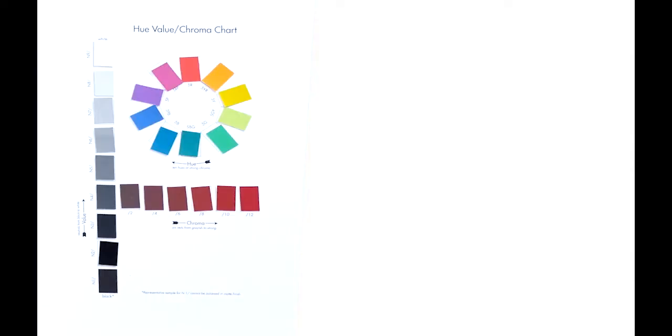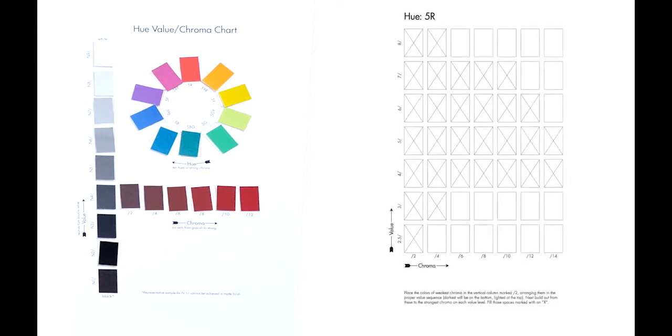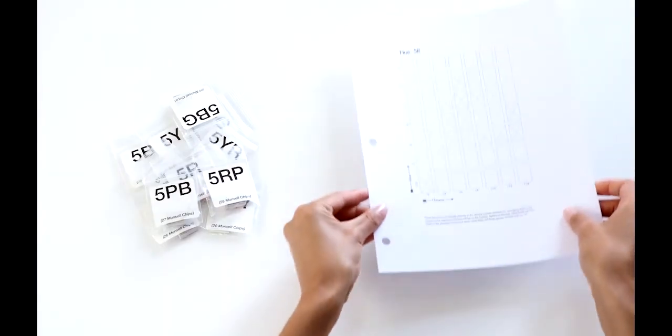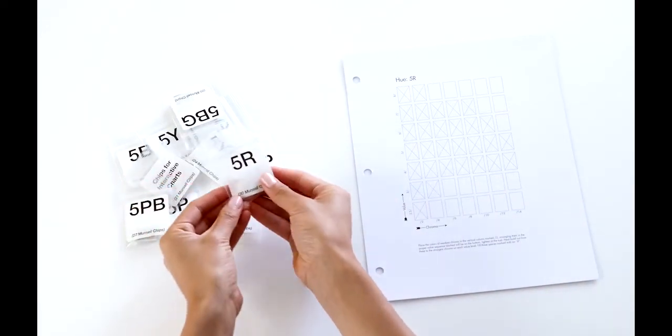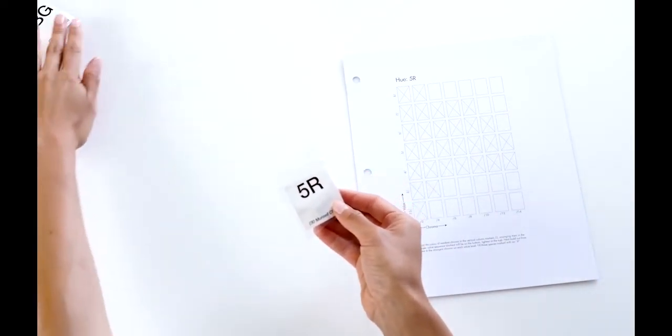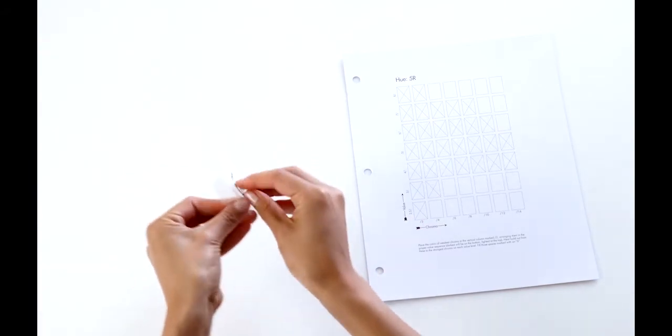Once you've completed the hue value chroma chart, you can move on to the individual hue charts. Begin by placing a single chart and corresponding bag of chips in front of you.